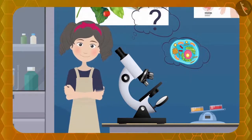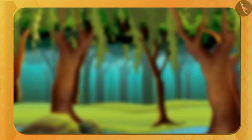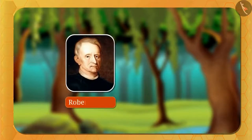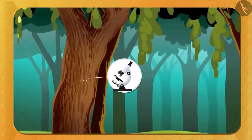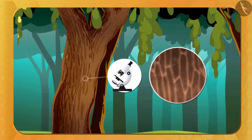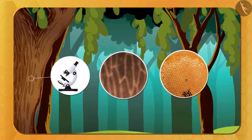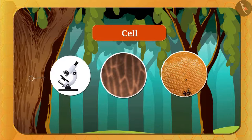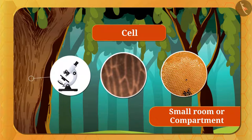Let's see how the cell was discovered. In the 1590s, a scientist named Zacharias Janssen invented the first real compound microscope. Then in 1665, a great biologist named Robert Hooke examined the bark of a tree under the compound microscope and found that the bark had many small cells whose structure is similar to a beehive. He called these blocks a "cell" — a Latin word meaning small room or compartment.